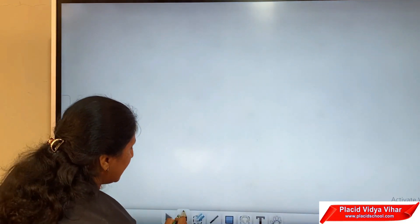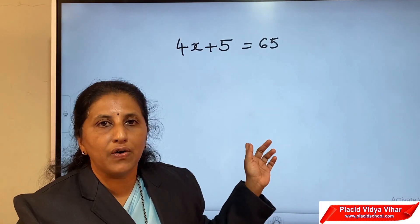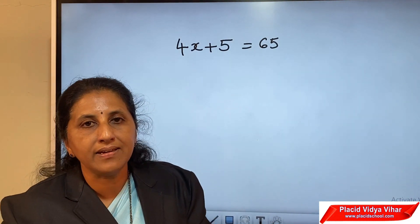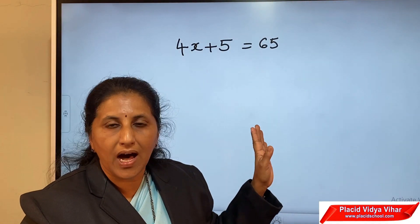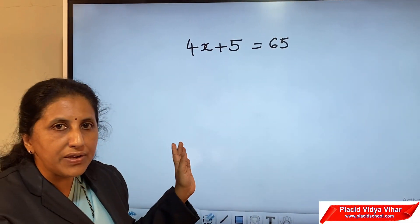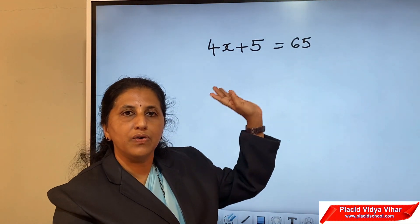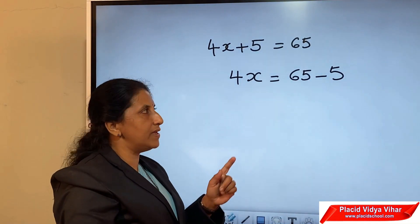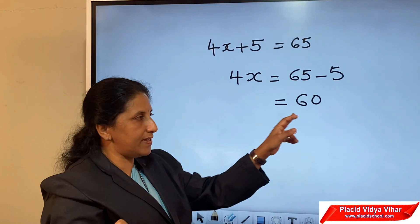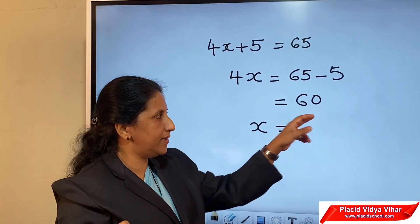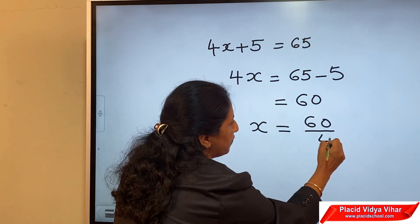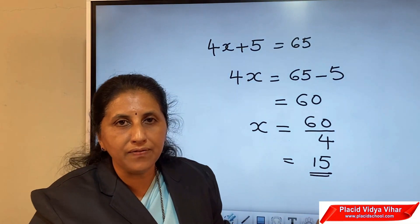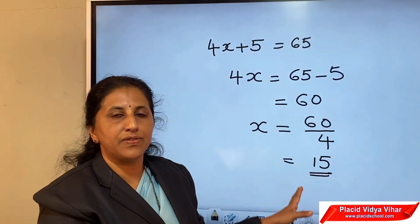We are going to discuss how to solve linear equations. Go through the puzzle itself: the equation formed is 4x plus 5 equals 65. Keep the variable in one side and transpose all the constants to the other side. So you have 4x equal to 65 minus 5, that is equal to 60. So 4x equals 60. Transposing 4 to the other side gives x equal to 60 by 4, which equals 15. So the unknown variable is 15. This is how we solve linear equations.